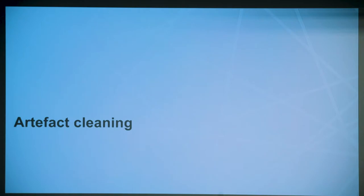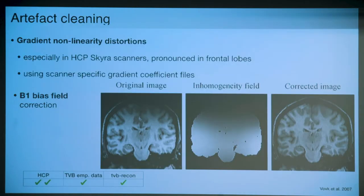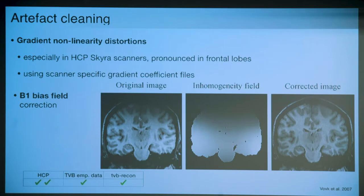Artifact cleaning - I'm sure you probably know a lot of them. There are spatial distortions and inhomogeneity artifacts. I'll use a table in the lower corner naming each pipeline with a red cross if a step is not available or a green tick if it is done. The HCP pipeline really takes care of a lot of these artifacts in a very good way - but again, this is dependent on their data quality.